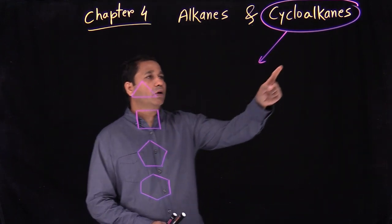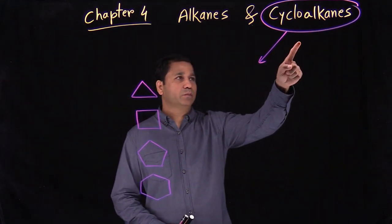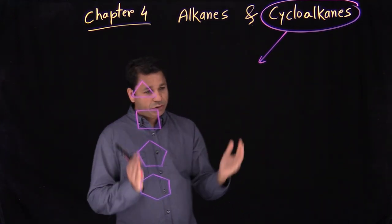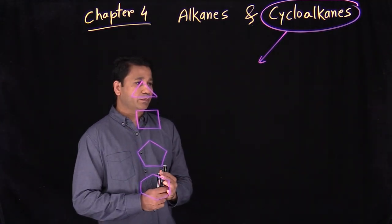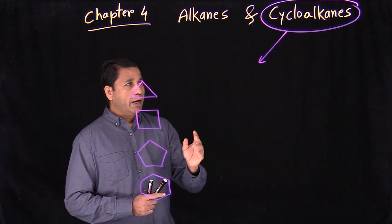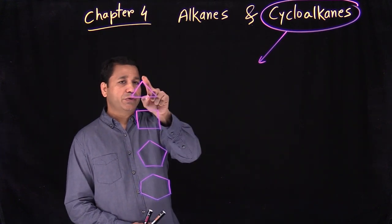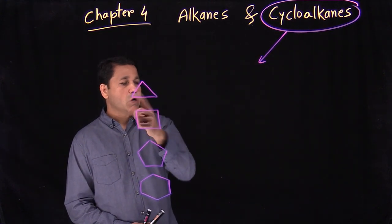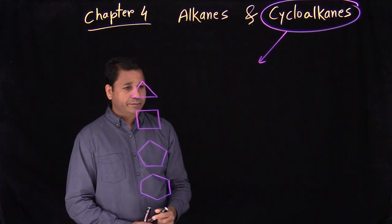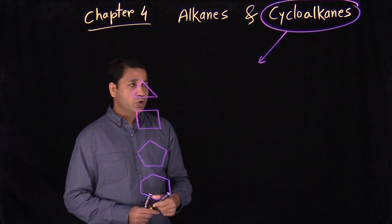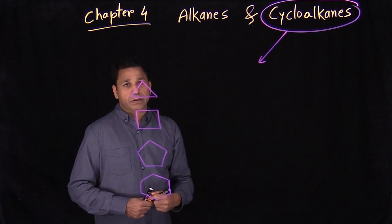Now let's talk about cycloalkanes. Cyclo means you have a ring, and we're still talking about alkanes because we only have carbon-carbon single bonds — no double bond, no triple bond here.